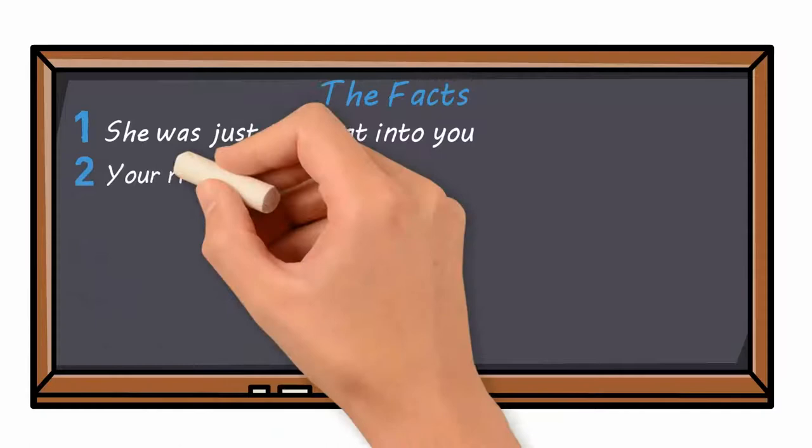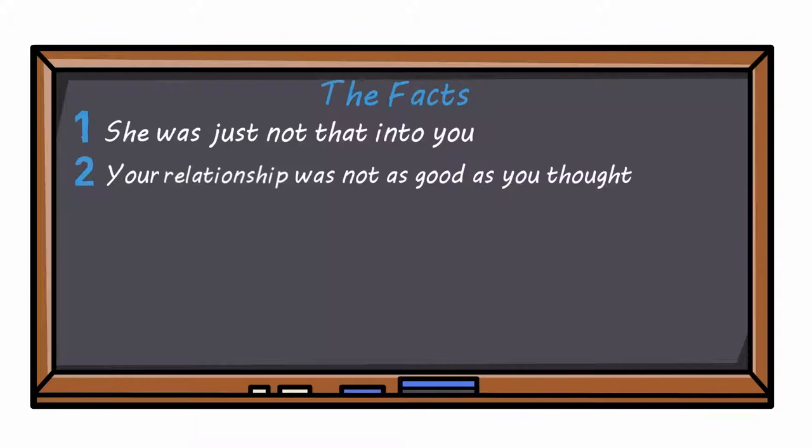Number two: your relationship was not as good as you thought. If it was this great of a relationship as Mark believed, she would have not left him in the blink of an eye for another guy.